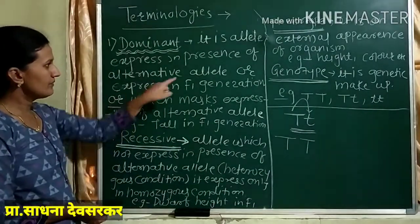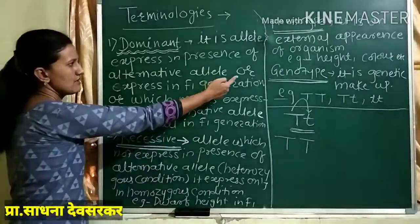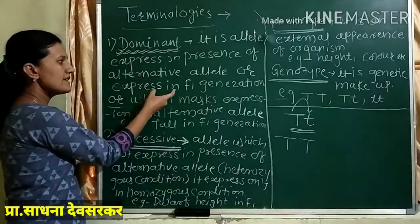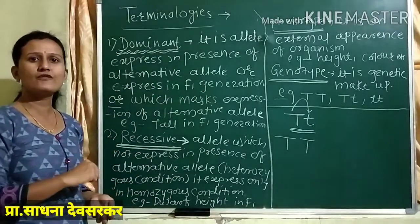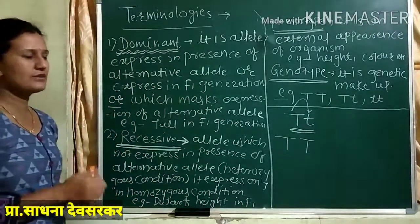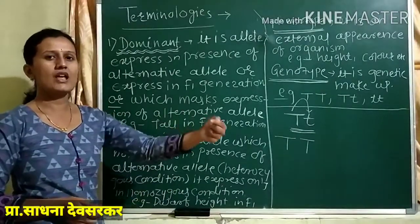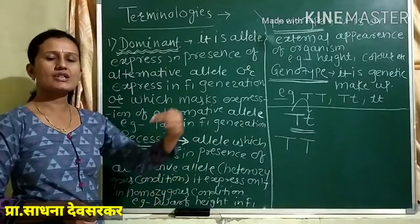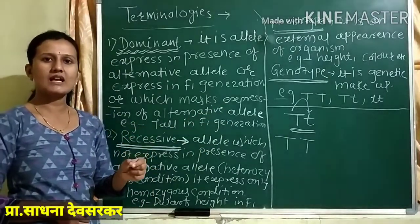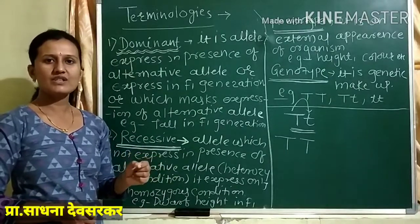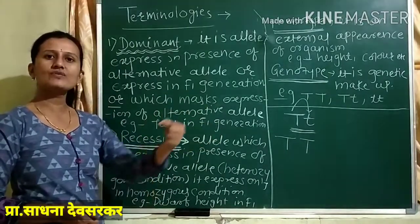The next definition: dominant may also be represented as the character expressing in F1 generation — the condition expressing in F1 generation. The F in F1 and F2 comes from a Latin or Greek word; F stands for 'filial,' meaning offspring, progenies of the next generation, progenies of the parent.